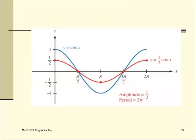Comparing with the basic graph y equals cosine x, the red curve y equals one half cosine x behaves the same way but is flatter — not as tall. The coefficient is one half, so the graph is compressed vertically by a factor of one half relative to the original. The amplitude equals one half, which is the measurement from the midline of the graph to the top.